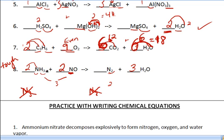So I put a 2 here. So now I have 2 nitrogens plus 2 nitrogens. That's 4 nitrogens. So let's put a 2 here.